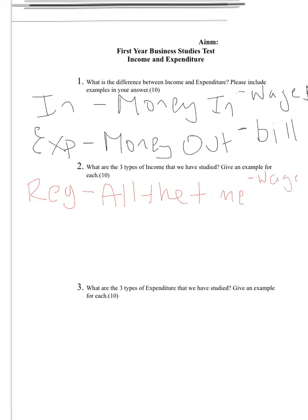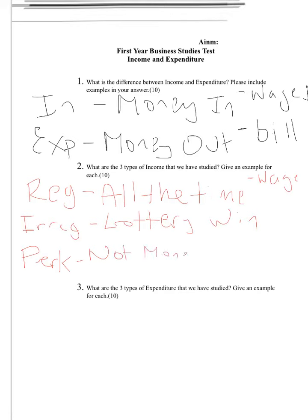The second type is irregular income — it doesn't happen all the time. That could be like a lottery win; you cannot depend on it. Regular happens all the time like a wage, irregular you can't count on like a lottery win. And the last one is a perk — it's not money. It's any sort of income you receive that isn't money, like a car parking space.